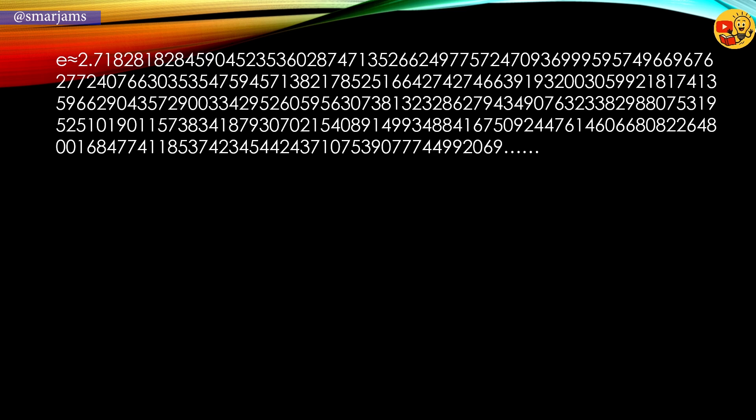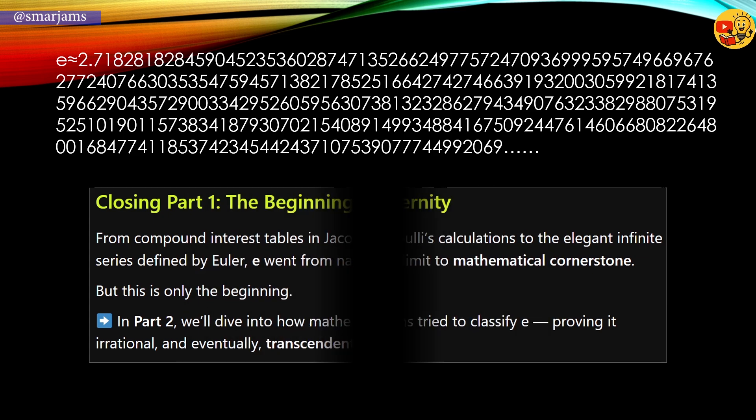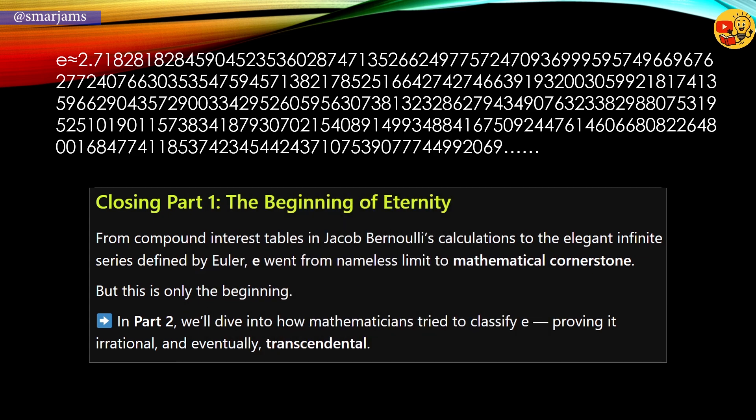This concludes part 1. From Bernoulli's interest tables to Euler's infinite series, e transformed from a hidden limit into a cornerstone of mathematics. But the journey is not over. In part 2, we'll explore how mathematicians proved e is irrational, and even transcendental.